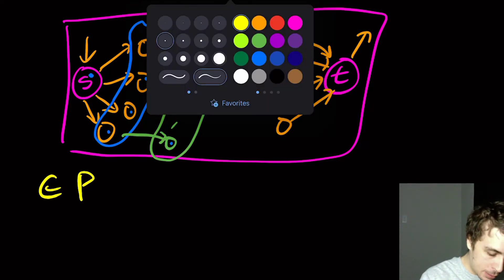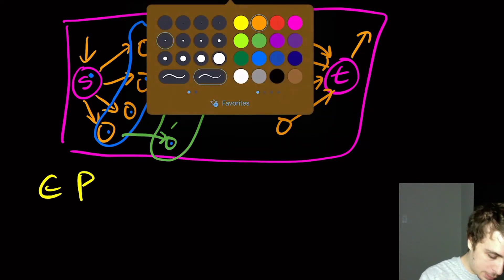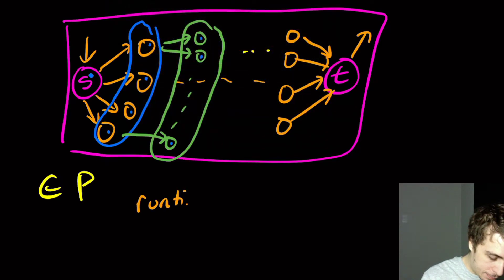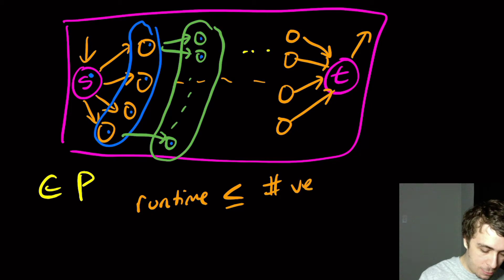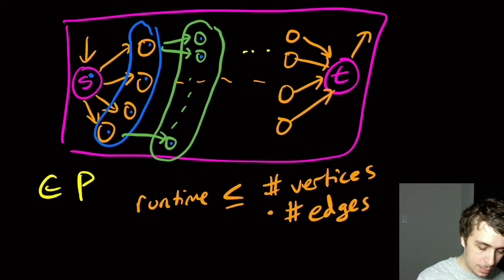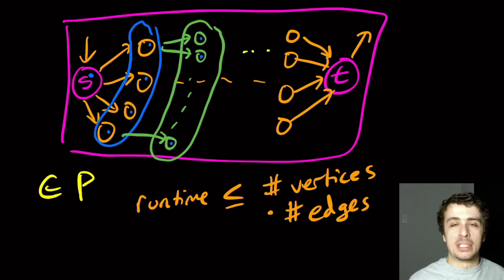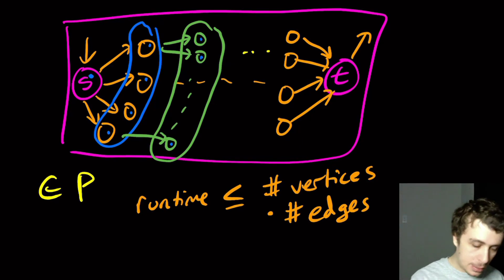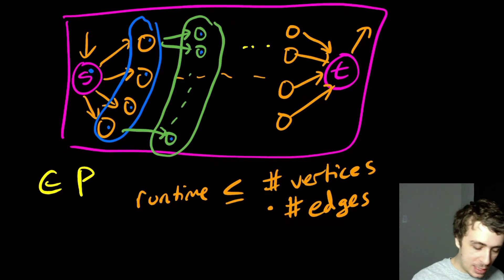So the number of edges times the number of vertices is an upper bound on the run time. So here the run time is at most the number of vertices times the number of edges. And we will run out of vertices at some point because the graph is finite. And so therefore, we have a runtime that's like this.